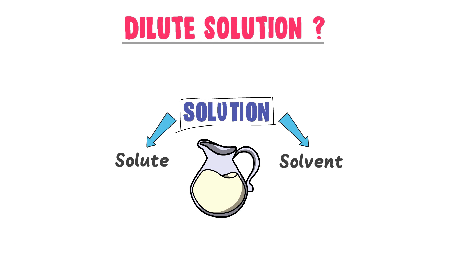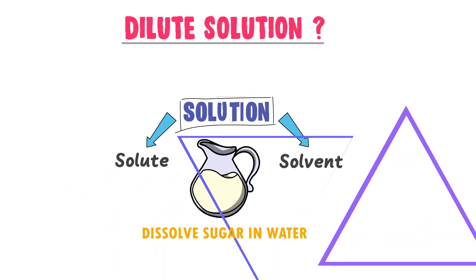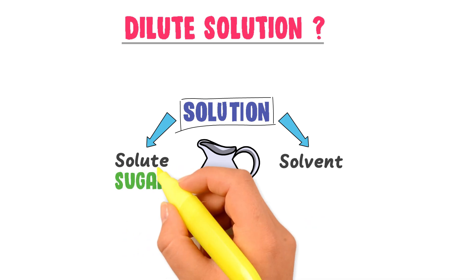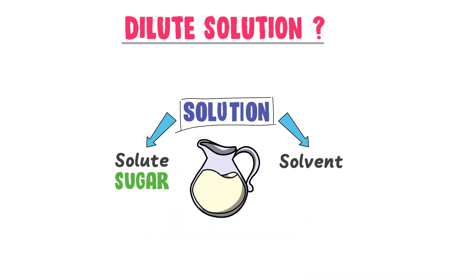when you dissolve sugar in water, you get a sugar solution. Here in this solution, sugar is the solute and water is the solvent.